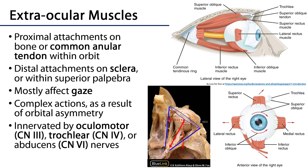Their proximal attachments are either within the bone of the orbit or on the common annular tendon, which is found at the posterior aspect of the orbit. Their distal attachments are largely on either the sclera, or in the case of levator palpebrae superioris, on the superior eyelid. Most of these muscles therefore are going to affect gaze or the direction that the eyes are pointed.